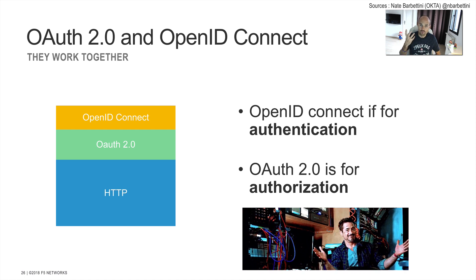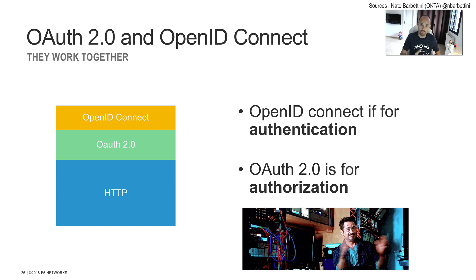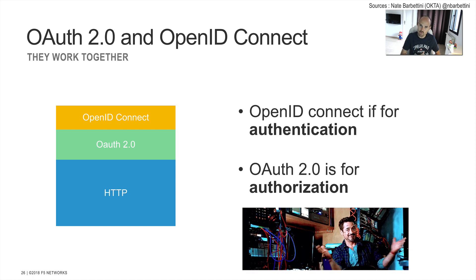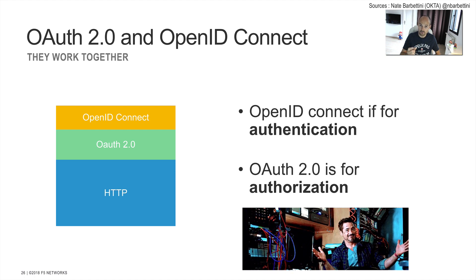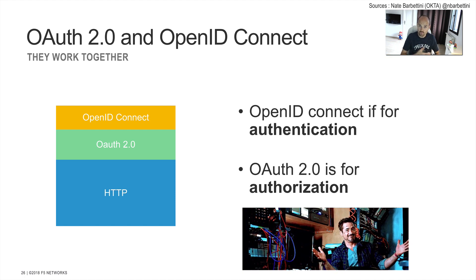So the authorization server — someone who knows you — provides to the mobile application your first name, last name, and your profile. And sometimes, if you connect with Facebook or Google, you can see your profile picture or avatar. This is OpenID Connect. So OpenID Connect is just there to get information regarding your identification. For the access, to grant an access, OAuth V2 is for authorization.